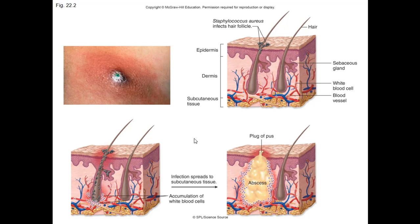For bacterial skin diseases, few organisms will invade the skin directly. Some can invade via the hair shaft. Many can invade via skin wounds — this is where we'll get into diseases and infections of wounds, which will be covered in the 13th lecture.